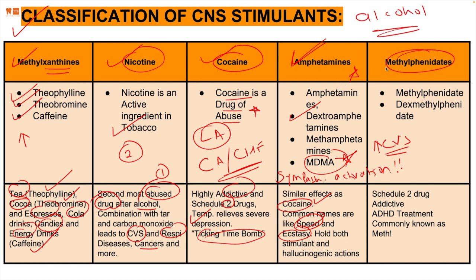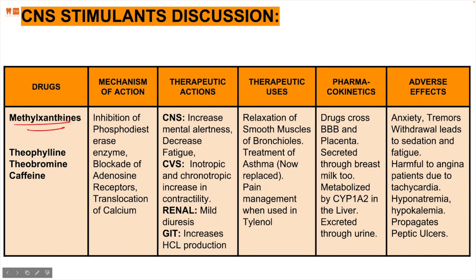Methylphenidates are used for students studying for exams. It is a schedule two drug and addictive due to its ability to increase focus, but it is used therapeutically for ADHD — commonly known as Ritalin. Now let's look at the pharmacological aspects of methylxanthines: theophylline, theobromine, and caffeine.